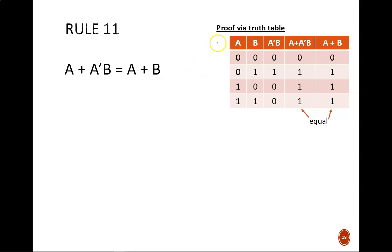Again, we can prove rule 11 through a truth table. The two rightmost columns are identical, which shows that A or A prime B equals A or B.